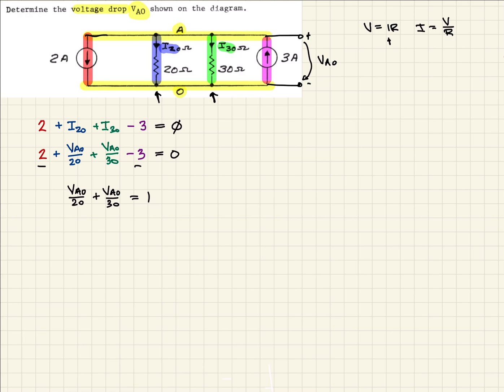Now we want to get rid of all the fractions. To do that, we just pick the number 60. We'll multiply everything by 60. When we do that, the first term, 60 divided by 20, should be 3. So that's 3 VAO. And then, 60 divided by 30 is 2. So that's 2 VAO. And 60 times 1 should be 60.